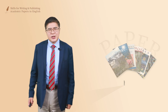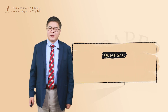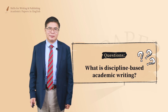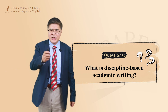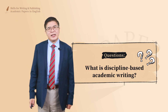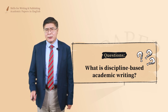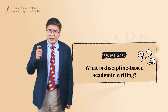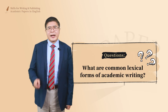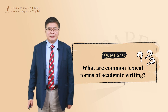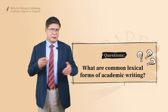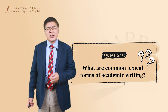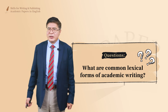Now, first of all, I have these questions for you. First question: what is discipline-based academic writing? We all know that we have all different disciplines and each discipline may have its own expected guidelines and writing styles, and you better keep this in mind. The second question is: what are the common lexical forms of academic writing — meaning the grammatical requirements for writing? You cannot write English from Chinese, because you think in a Chinese way and you cannot produce good English.